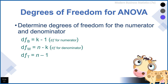The degrees of freedom for a one-way ANOVA consider both the numerator and denominator of the F-ratio. In the numerator, degrees of freedom between is k minus 1. If we were comparing four groups, k minus 1 would be 3. The degrees of freedom within for the denominator is n minus k, where n is total sample size and k is number of groups. For example, 20 participants in four groups gives 20 minus 4 equals 16. The degrees of freedom total is n minus 1. The degrees of freedom between plus degrees of freedom within will always add up to the degrees of freedom total.